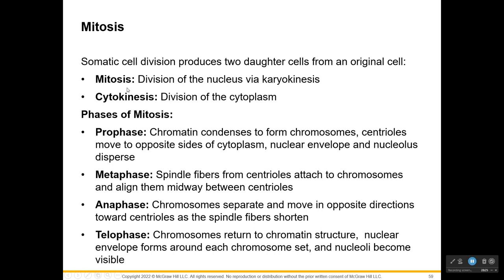Somatic cells — your body cells — divide from one cell into two through the process of mitosis and cytokinesis. To do cell division, you have to do both parts: first mitosis to divide the nucleus, which is critical because it contains the chromosomes, and then divide everything else through cytokinesis. The phases of mitosis are prophase, metaphase, anaphase, and telophase — PMAT in that order.